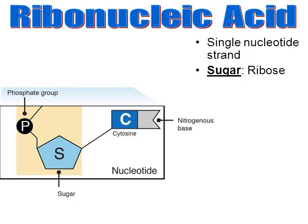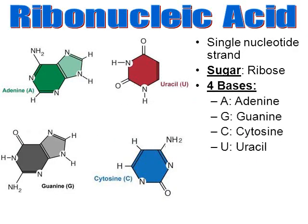The sugar in DNA is called deoxyribose, while in RNA the sugar is called ribose. RNA has four nitrogen bases: adenine, guanine, cytosine, and uracil. This is a different nitrogen base — we're used to seeing thymine in DNA. Thymine exists in DNA molecules; however, uracil exists in RNA molecules. So uracil is replacing thymine in the world of RNA.